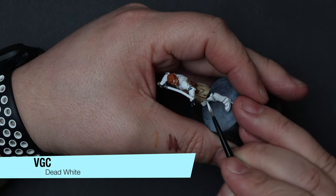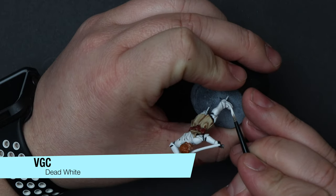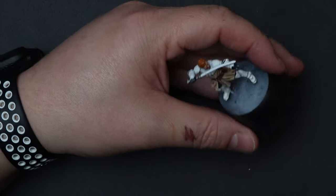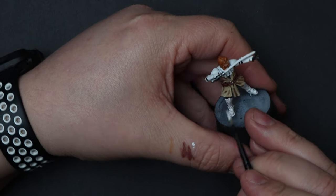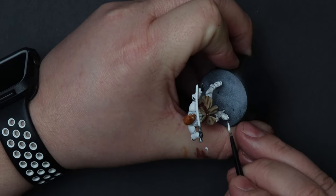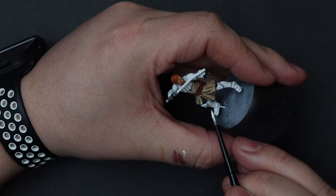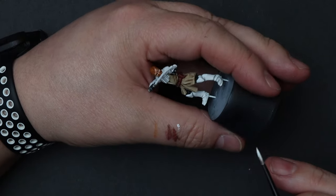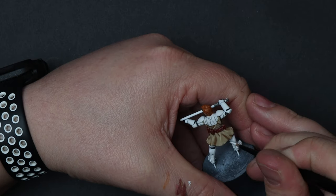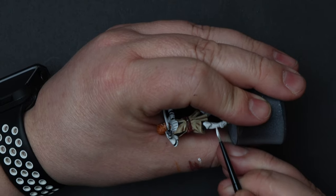Using some of Vallejo game color dead white, let's go ahead and pick out areas of the armor that need a slight boosting. I use this on the top of the knees, the calves, the part covering the inside of the ankles, as well as the wrist guards, shoulder pads, and forearms. Remember, this is a boost of the white and is not meant for complete coverage, so use this sparingly and only in areas that are upward facing or would be shining from the light.